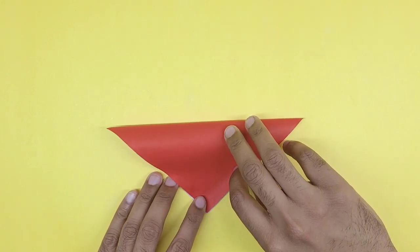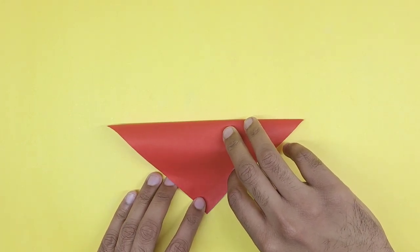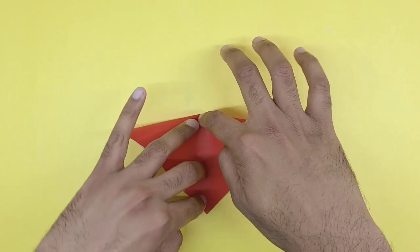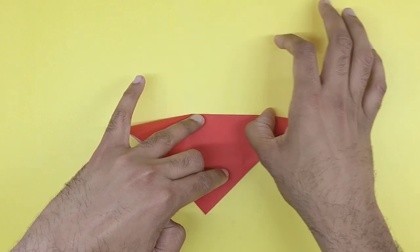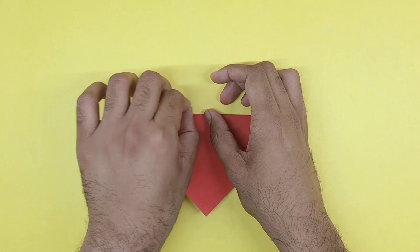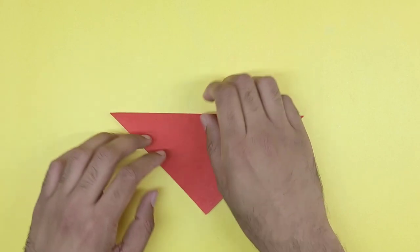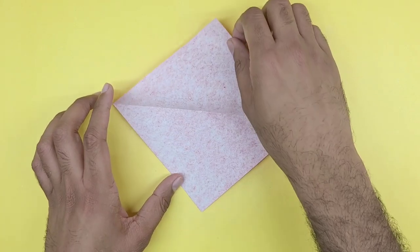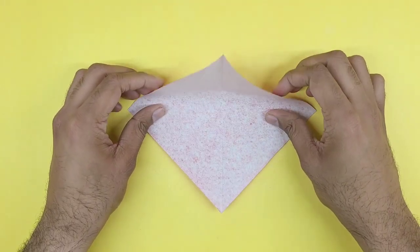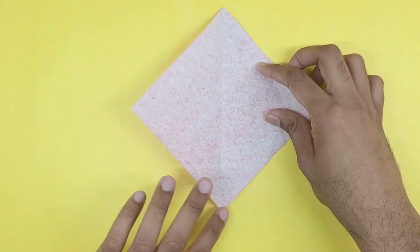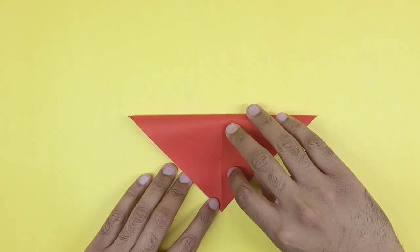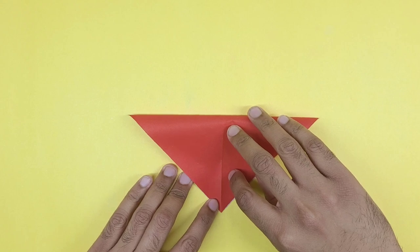Fold it in half. Fold the other side in half and open it back up so that you have two creases on the origami paper.